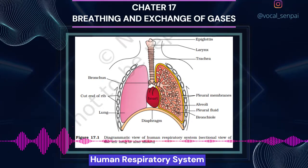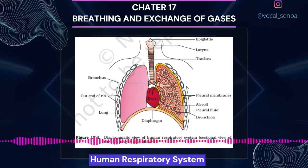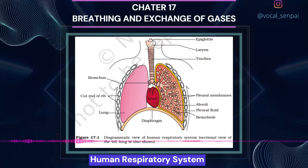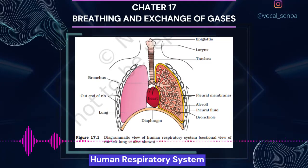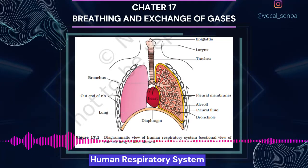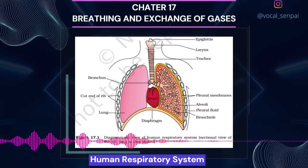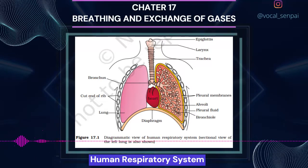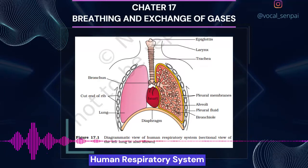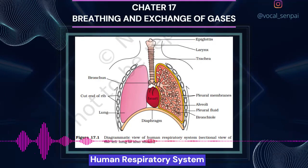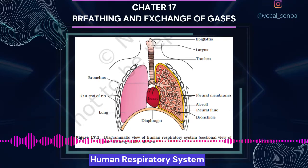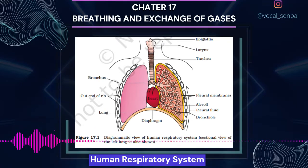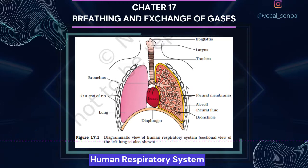The lungs are situated in the thoracic chamber which is anatomically an airtight chamber. The thoracic chamber is formed dorsally by the vertebral column, ventrally by the sternum, laterally by the ribs and on the lower side by the dome-shaped diaphragm. The anatomical setup of lungs in the thorax is such that any change in the volume of the thoracic cavity will be reflected in the lung (pulmonary) cavity. Such an arrangement is essential for breathing as we cannot directly alter the pulmonary volume.